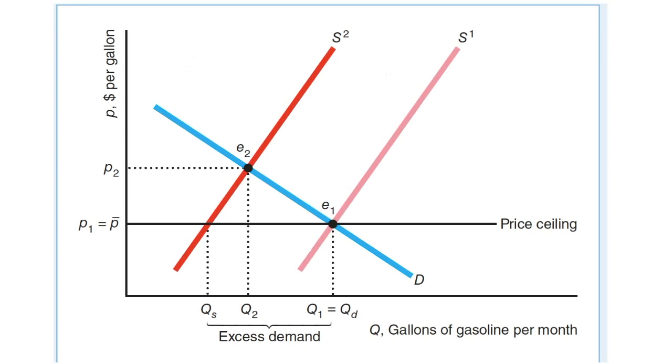A price ceiling legally limits the amount that a firm can charge for a product. If the price ceiling is below the equilibrium price, it will lead to excess demand or shortage. Sellers use criteria other than price to allocate the scarce commodity.